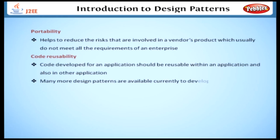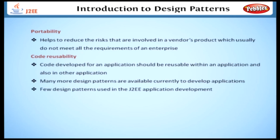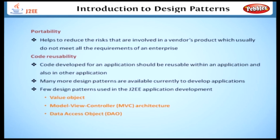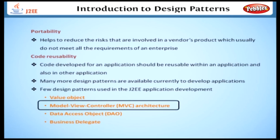There are many design patterns available currently to develop applications. Here I will show you some of the design patterns used in J2EE application development. They are: Value Object, Model View Controller architecture, Data Access Object, and Business Delegate. MVC architecture is one of the main patterns used in web application development. The other design patterns involving EJB are discussed in the next level. We will discuss each of these design patterns in the upcoming lessons in detail.